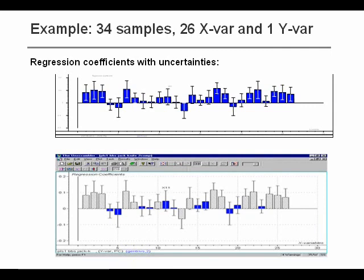Here's an example of what it would look like in the Unscrambler. We have plotted the regression coefficients of a PLS model from the plot menu, and we can see that we now have uncertainty bars on each and every variable. For some of these variables — for example, the fourth one — we can see that this uncertainty band includes zero. From this, we might deduce that the fourth regression coefficient might actually be zero, and that could lead us to exclude that variable from the regression model.